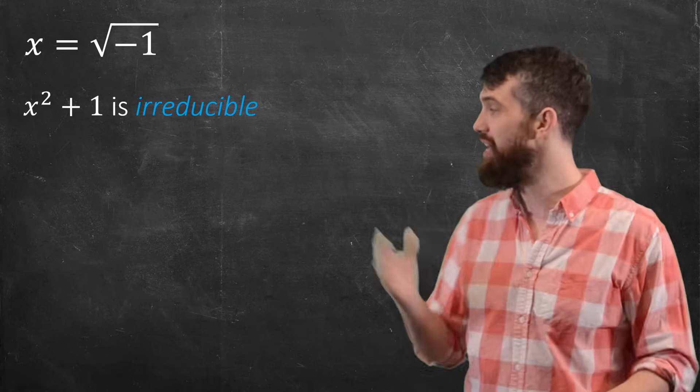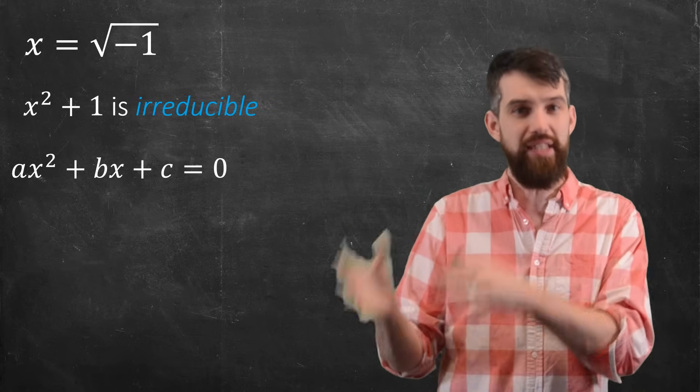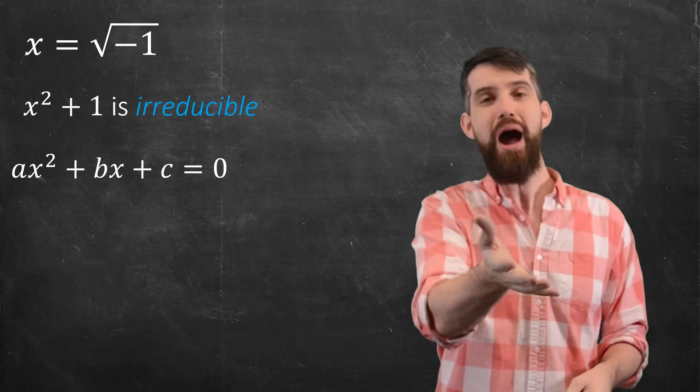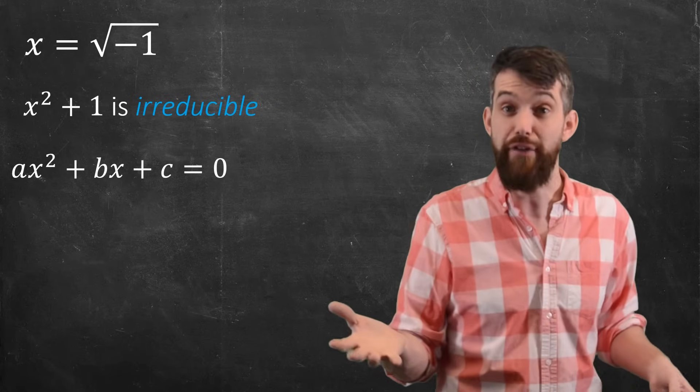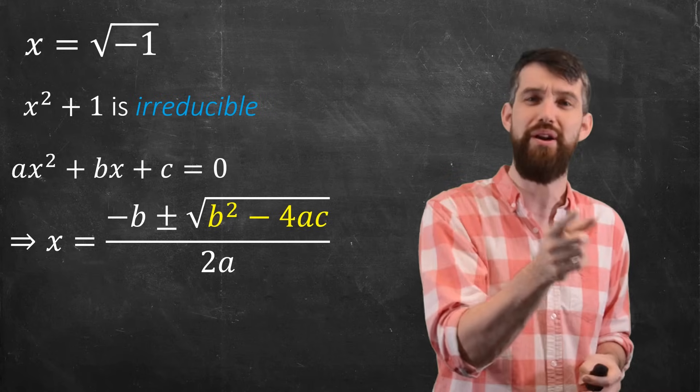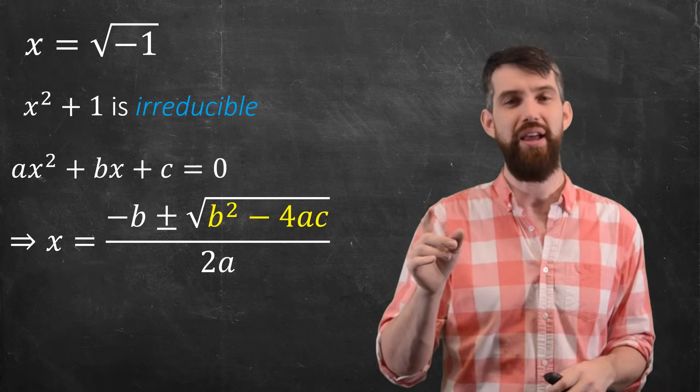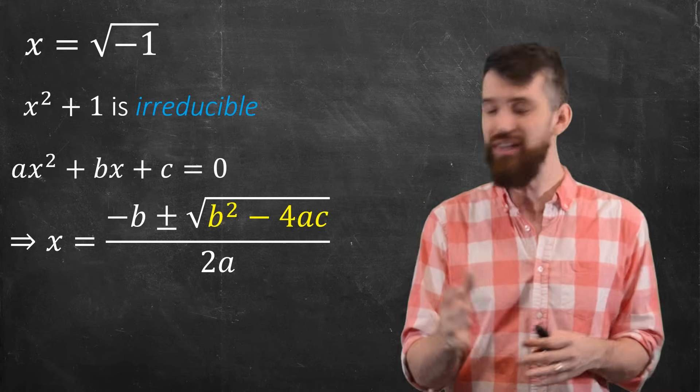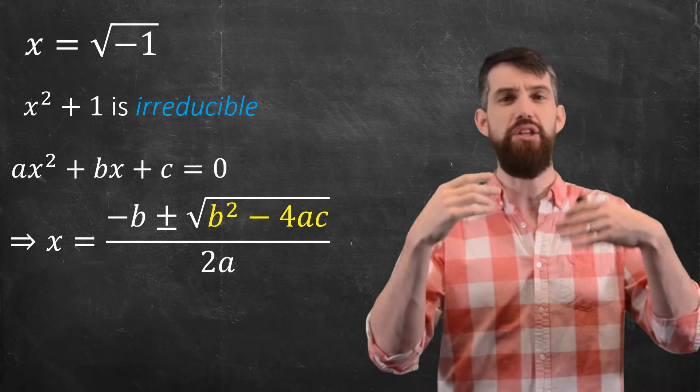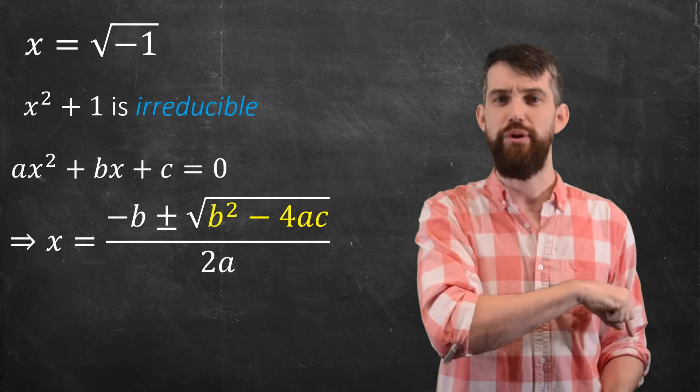More generally, if I take a generic quadratic, ax squared plus bx plus c, then we know how to factor this by the quadratic formula. The formula is that x is minus b plus or minus the square root of b squared minus 4ac all over 2a. It's a mouthful. But the point is that this is only doable—I can only use the quadratic formula if the thing inside of the square root is positive.